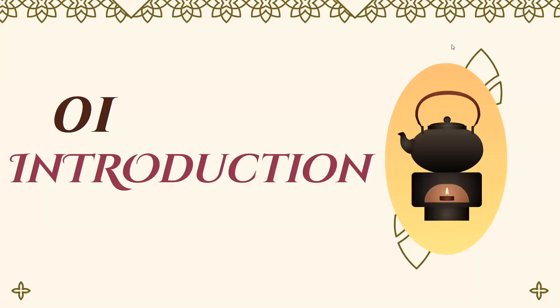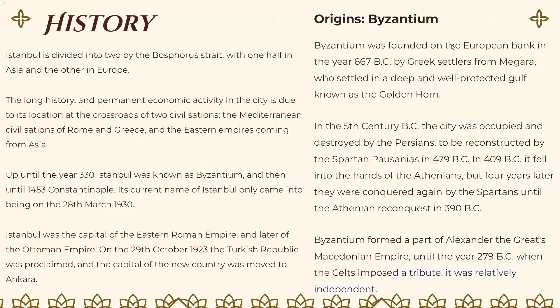A little about Istanbul. First, its history: Istanbul is divided into two by the Bosphorus Strait, with one half in Asia and the other in Europe. The long history and permanent economic activity in the city is due to its location at the crossroads of two civilizations — the Mediterranean civilizations of Rome and Greece.